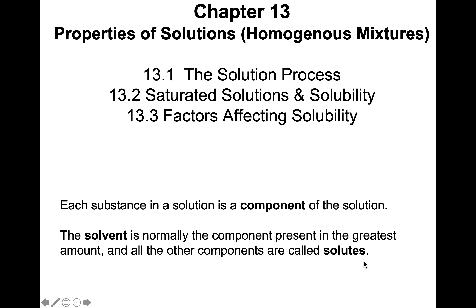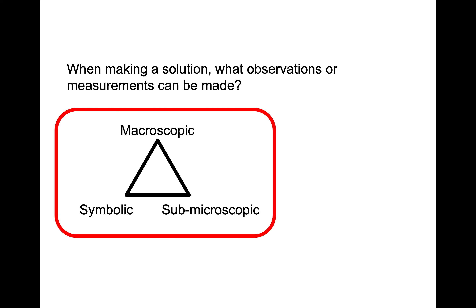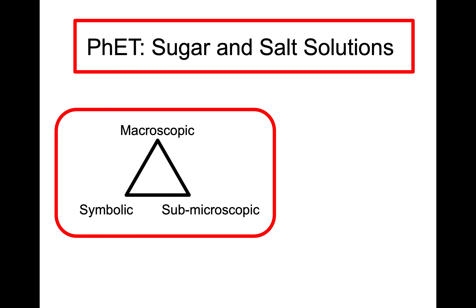As we step through this, the idea that we're going to be making solutions, discussing solvent and solutes — first reflecting on when we're making a solution, what kind of observations or measurements can we make? I'm trying to prime their understanding of macroscopically what we can measure when making a solution, within our chemistry triplet of the macroscopic, the sub-microscopic, and the symbolic. I've already explored this with my class involving PhET sims.